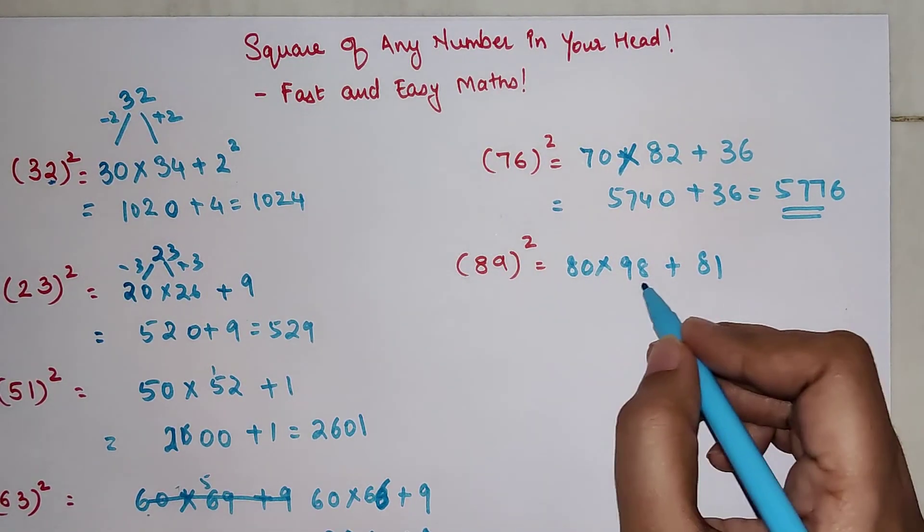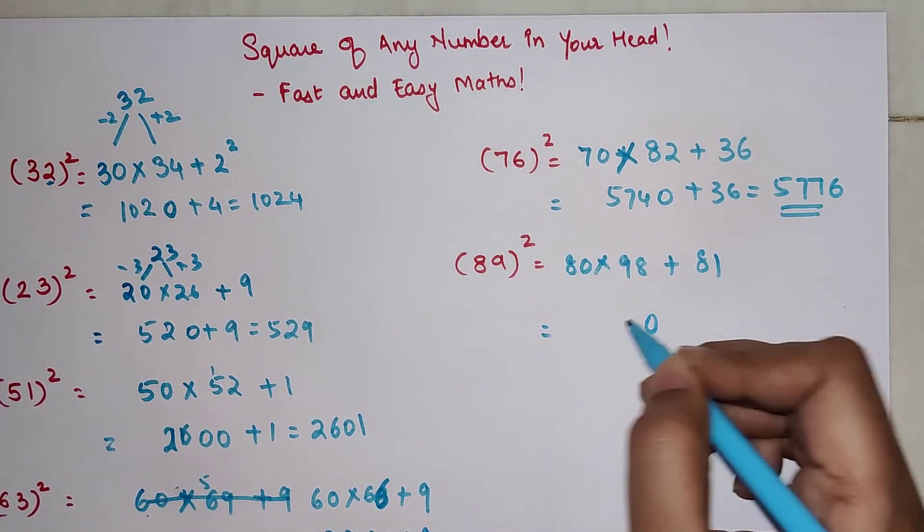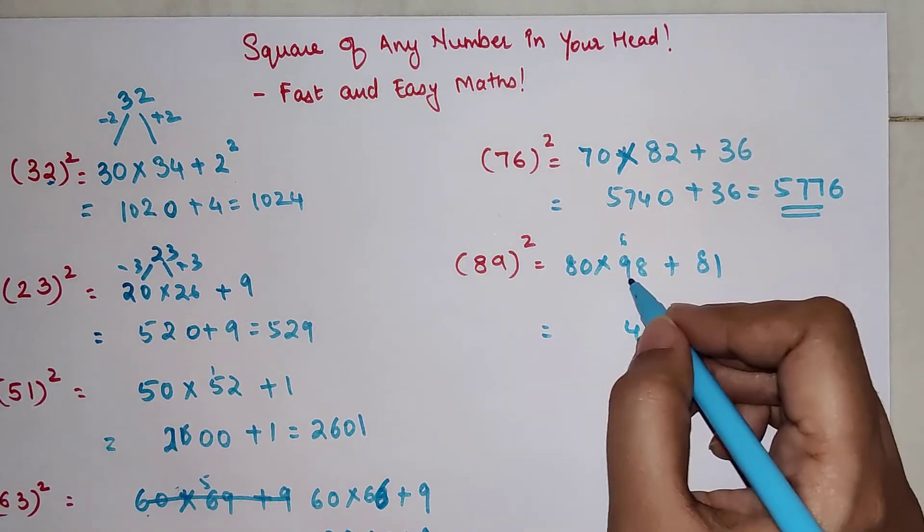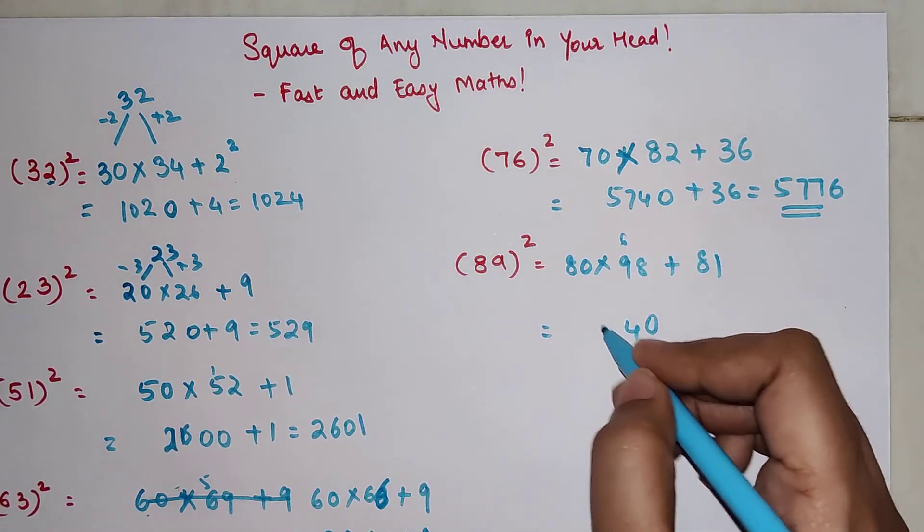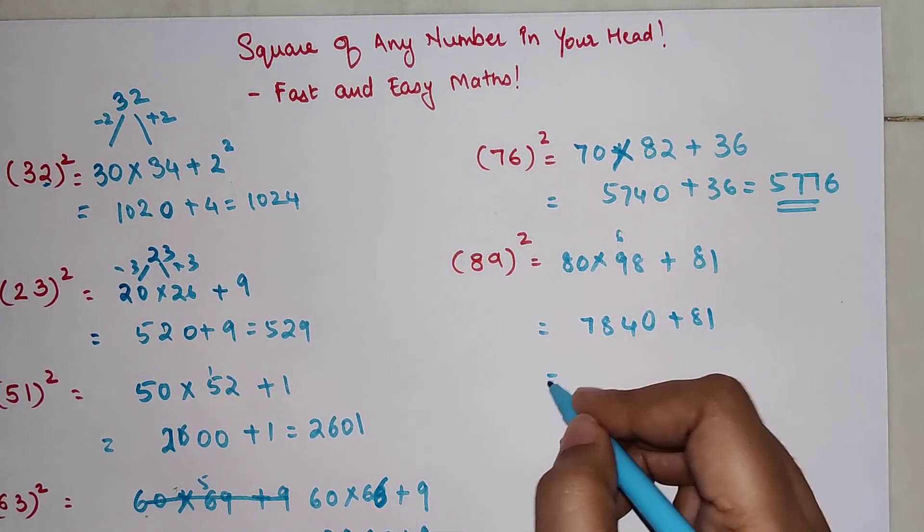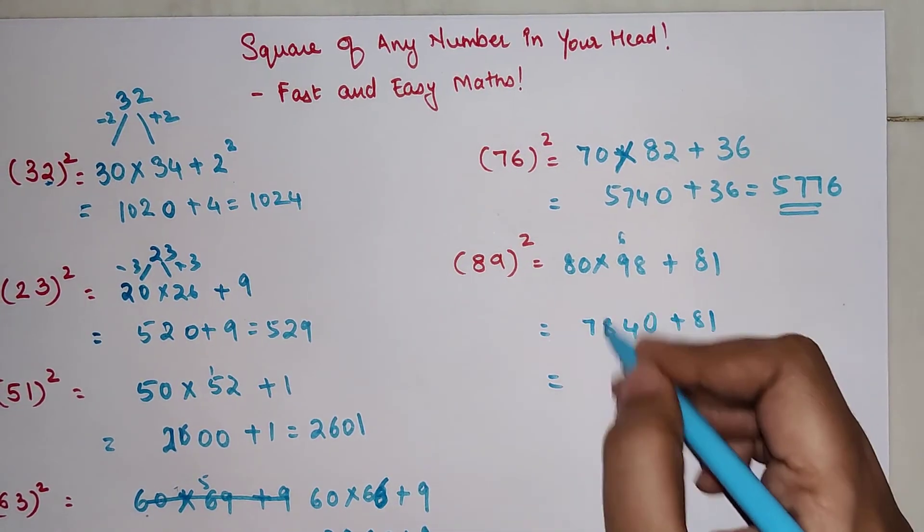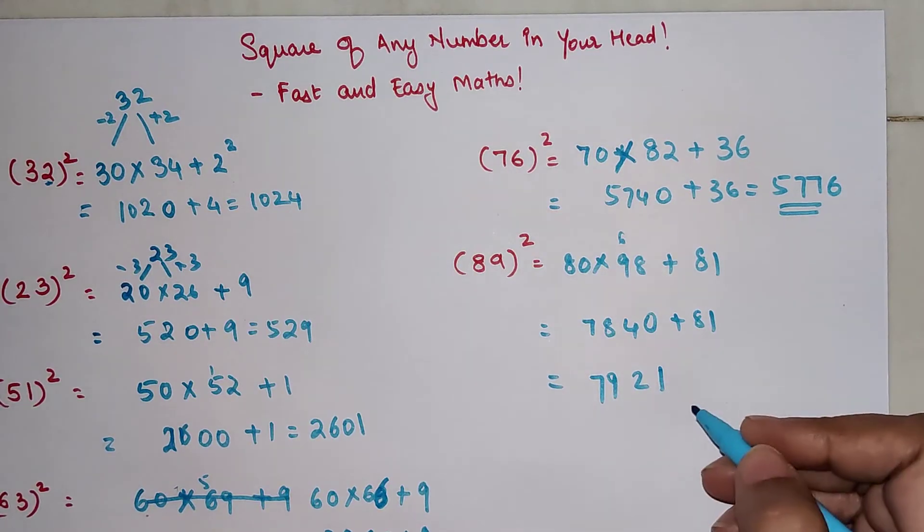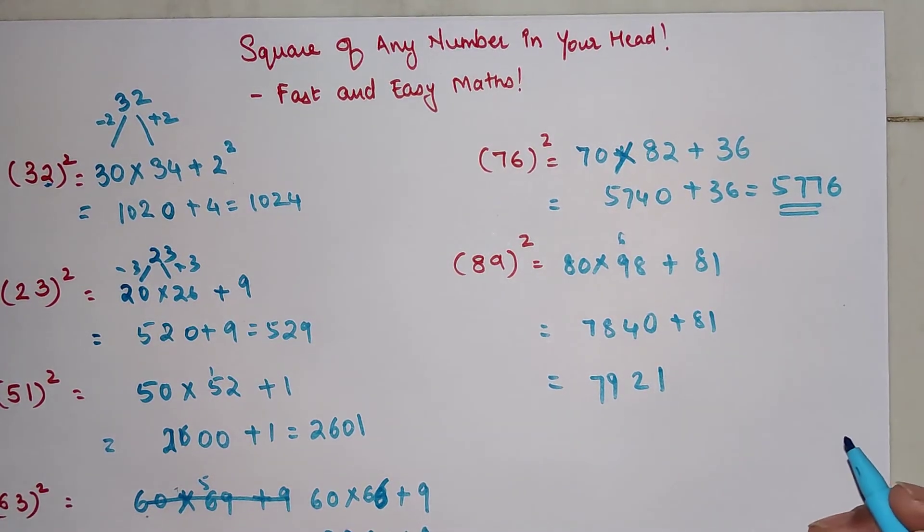We have over here 0, 4, 6 carry, so 72 plus 6 is going to get you 78 plus 81. That's going to get you 1, 2, 1 carry, 9, 7921. So that is your answer for 89 square.